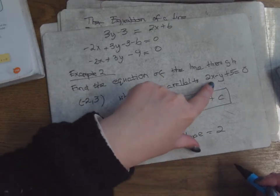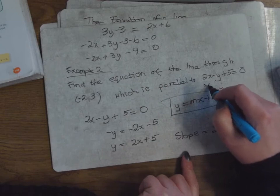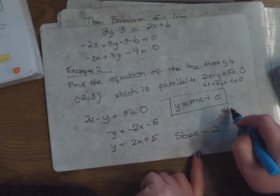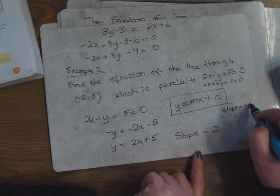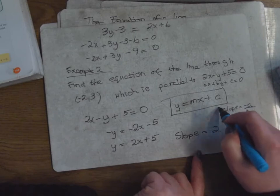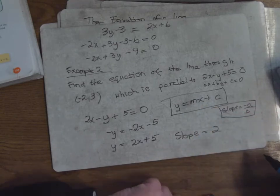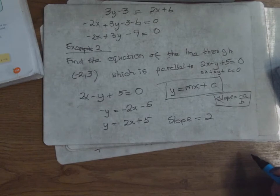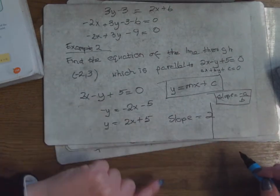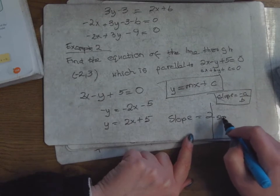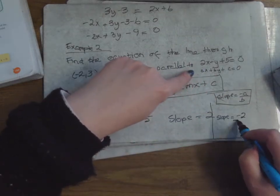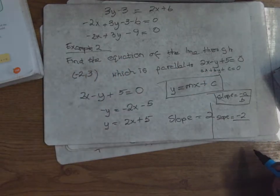Shortcut to getting the slope from an equation: when the equation is in the form ax + by + c = 0, this formula is not in the log tables, but the slope is −a/b. It's very handy. The slope is −a/b, where a is the number in front of x and b is the number in front of y. So the slope of this line: a is 2, b is −1, so the slope is −2/(−1) = +2. It's a lot shorter.